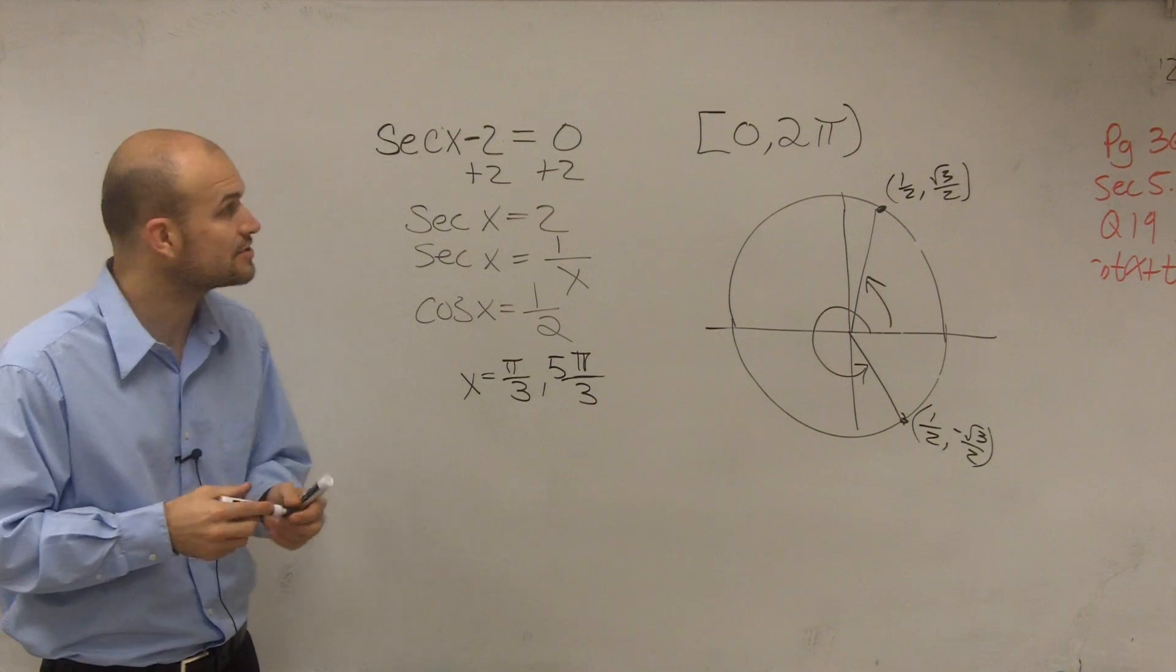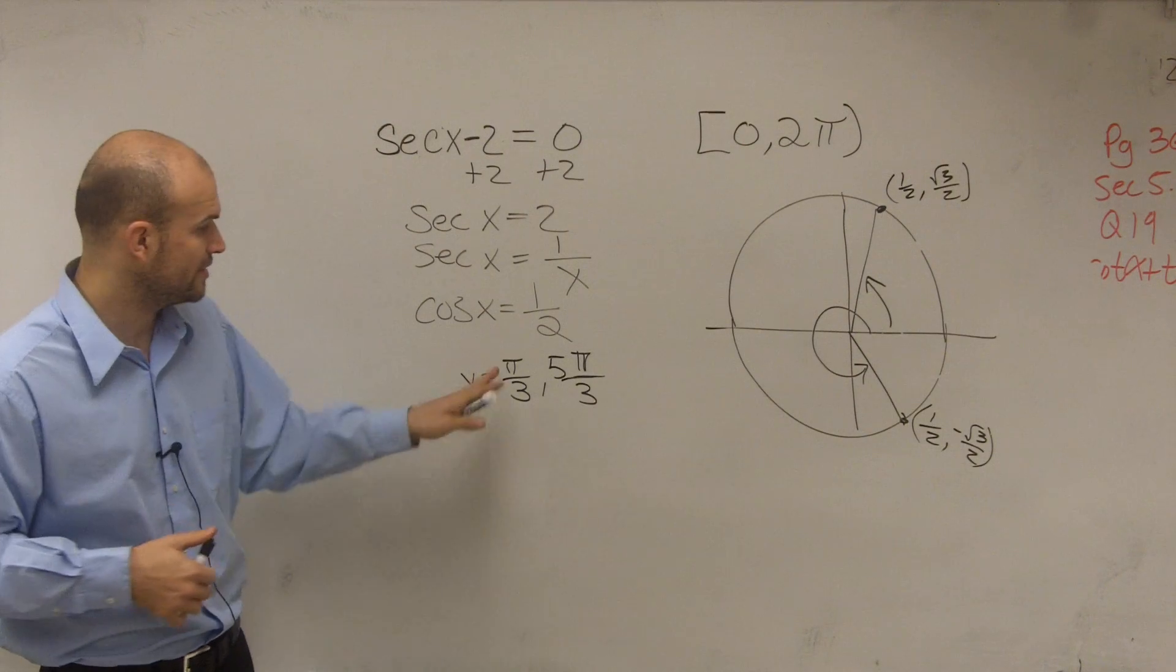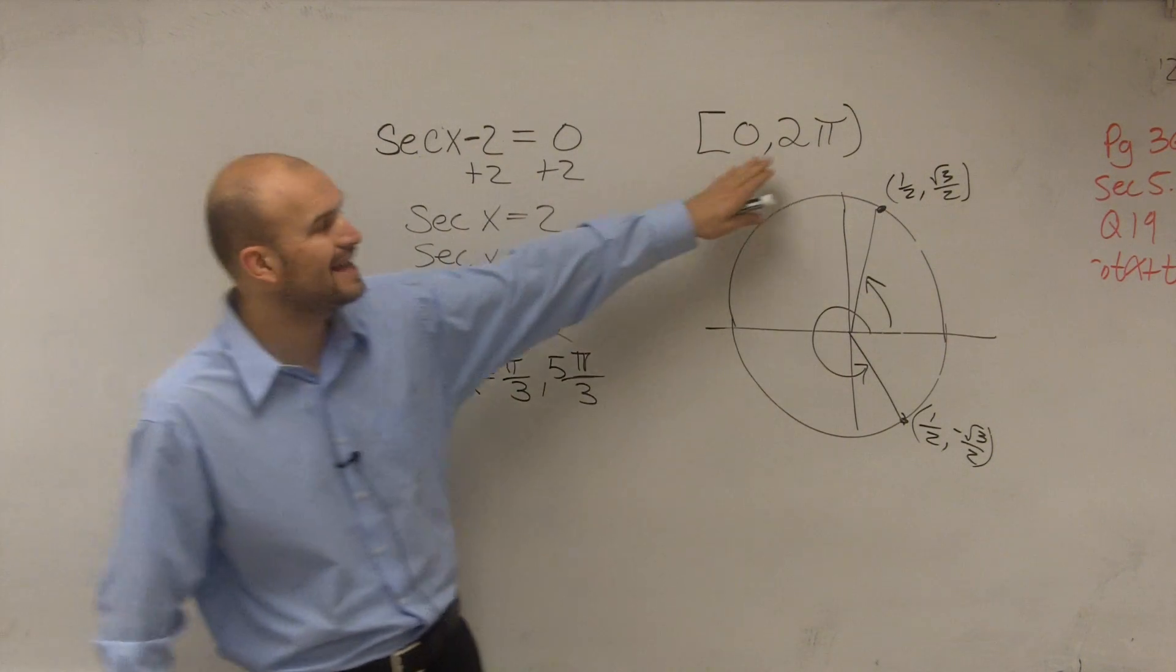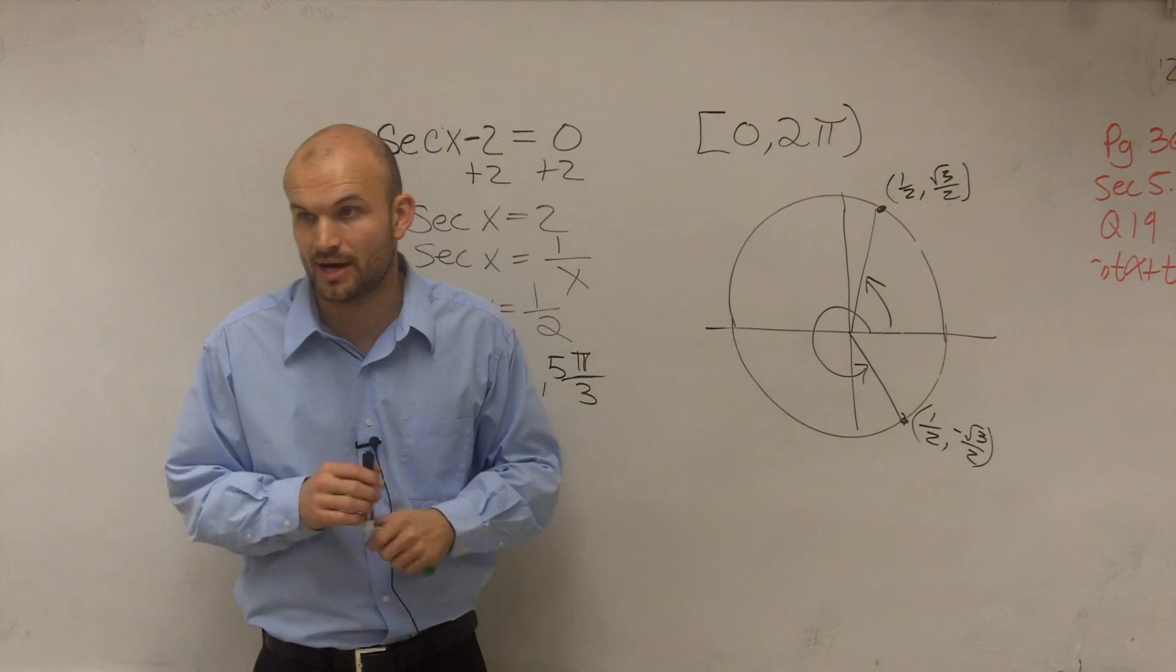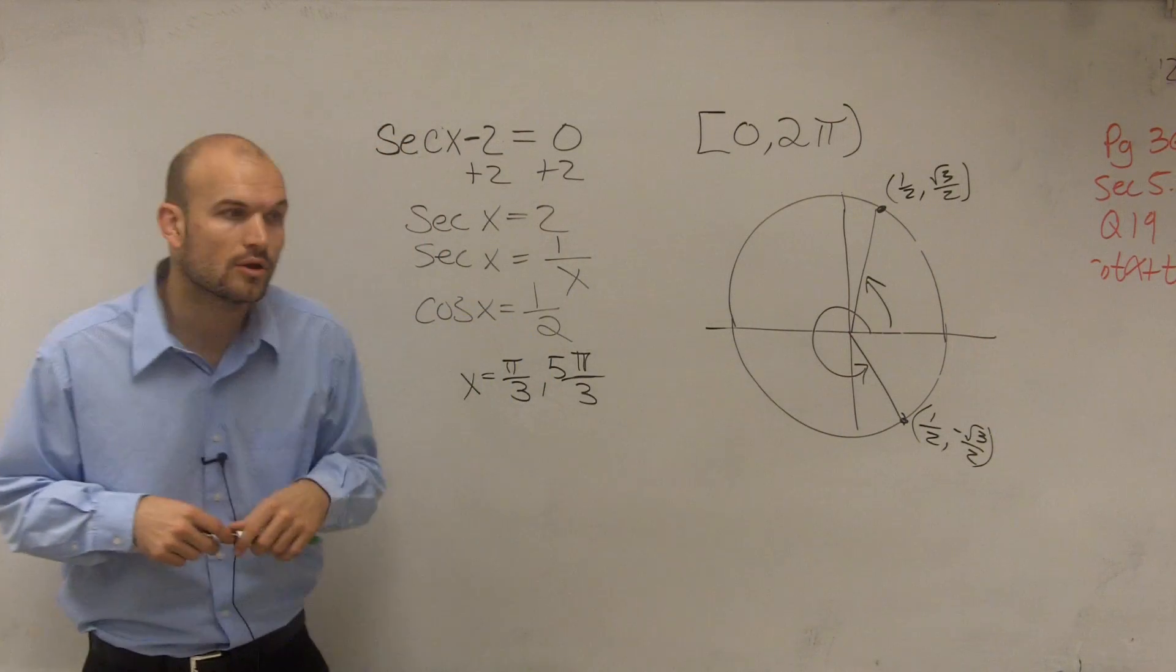Therefore, your equation has two different solutions: π/3 and 5π/3 on the interval of 0 to 2π. Questions?